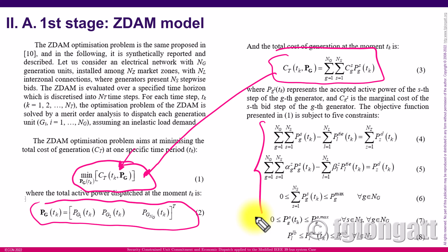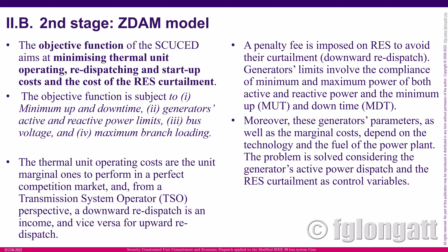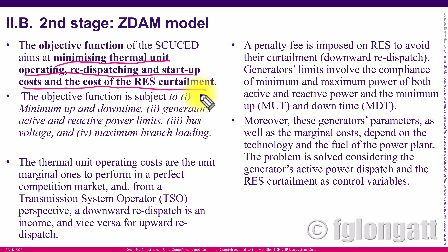The second stage of the proposed method has an objective function that minimizes the thermal unit operating redispatch and start-up costs, and also minimizes the curtailment of renewable energy resources. This objective function is subject to four constraints: minimum up and down time, generator active and reactive power limits, bus voltages inside limits, and maximum branch loading. This formulation includes the interest of the classical perspective of the transmission system operator regarding downward redispatch.